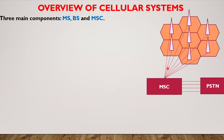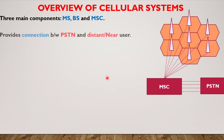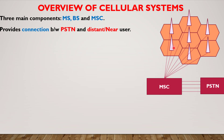A mobile station can be found anywhere in this coverage area, which is represented by these hexagonal shapes. The base station is inside these hexagonal shapes, and all base stations are connected to an MSC — that is, mobile switching center — which is further connected to a PSTN, your public switched telephone network. This connects to your landline phone at home, and the mobile user is connected to the PSTN network with the help of the MSC.